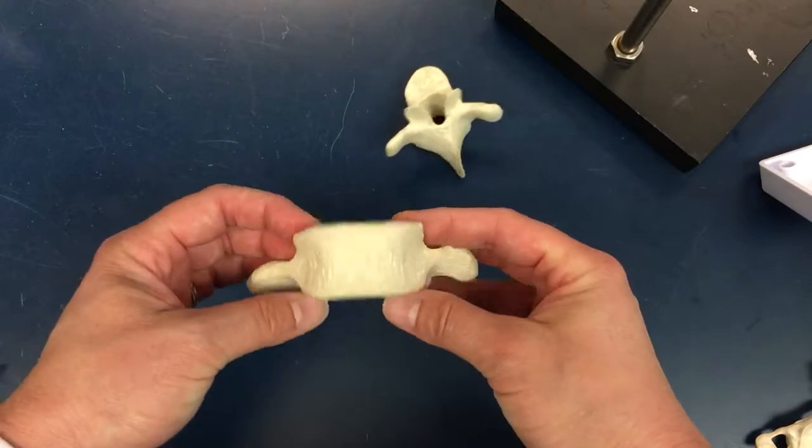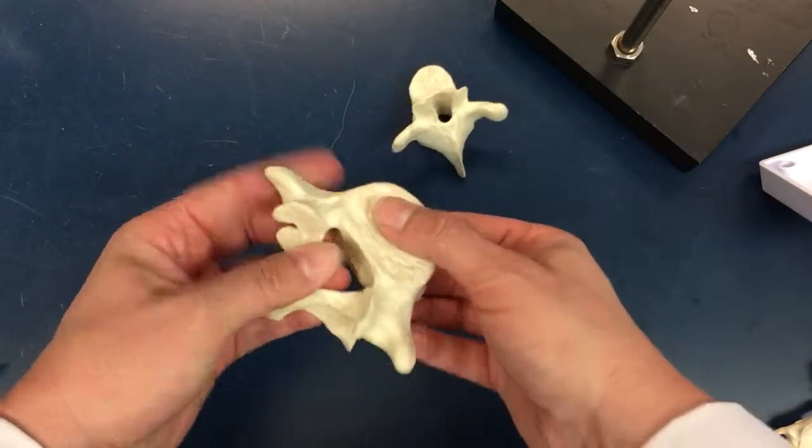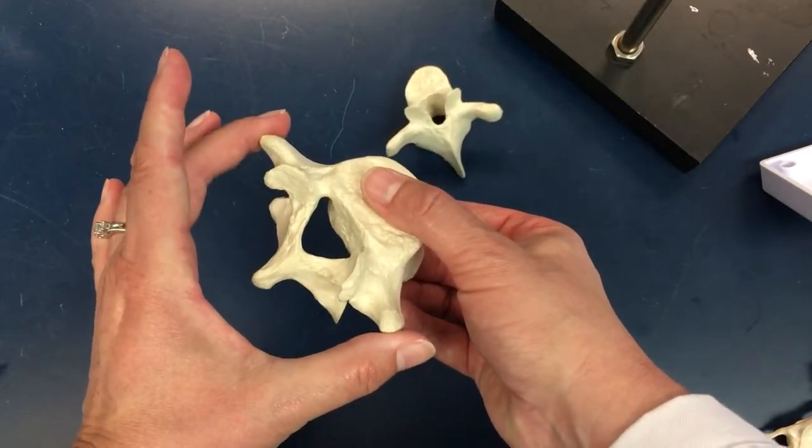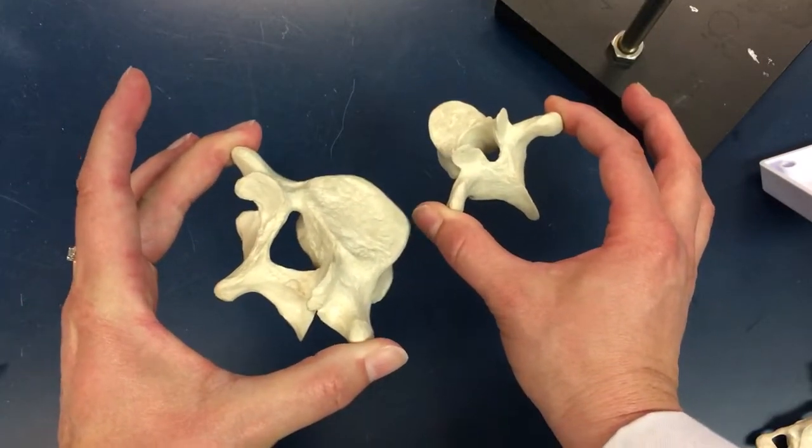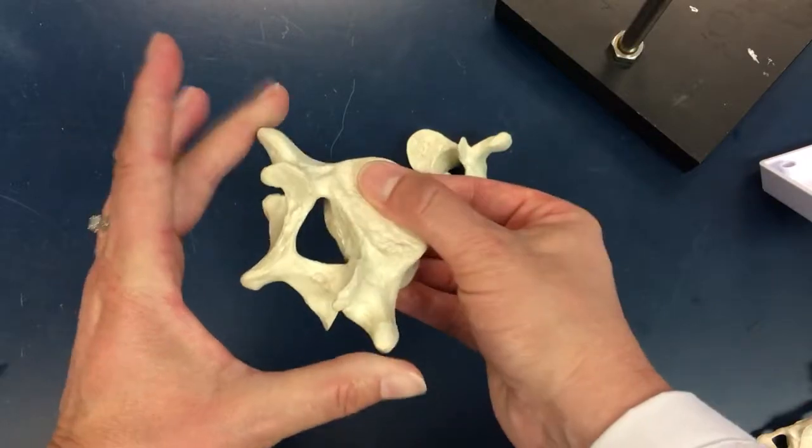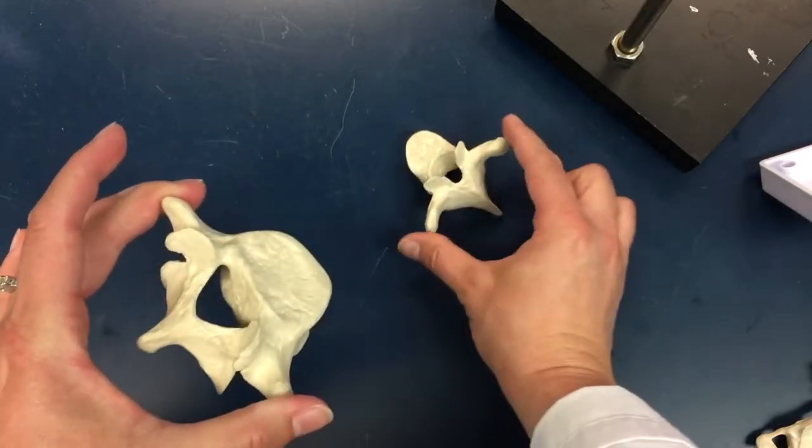A couple things that are really obvious on these are the things sticking off the side. On both of these vertebrae, these are referred to as transverse processes.